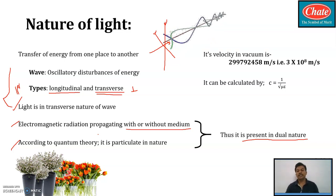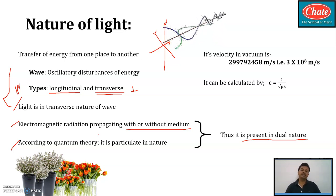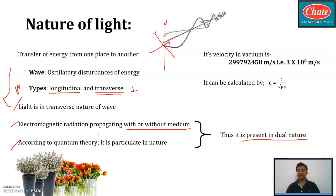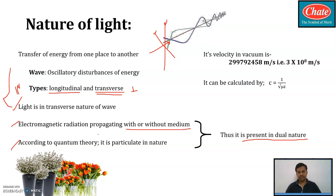So light has some properties that are explained by wave theory. Some properties explained in wave theory include: reflection, refraction, polarization, interference, and diffraction. These can only be explained when light is present in wave form.